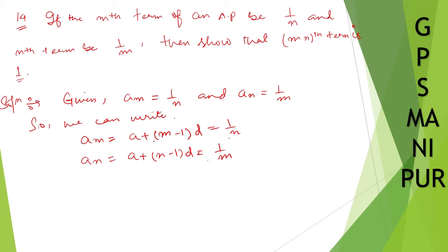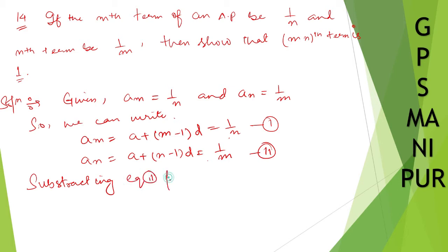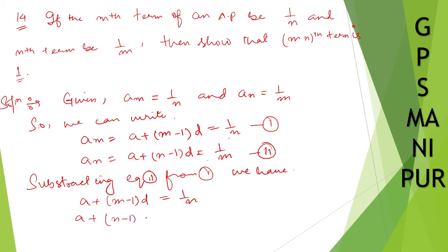Now, solving by subtracting equation number 2 from equation number 1. Writing down: a plus (m minus 1)d equals 1/n, and a plus (n minus 1)d equals 1/m. If you subtract, the signs become minus, minus, and minus.